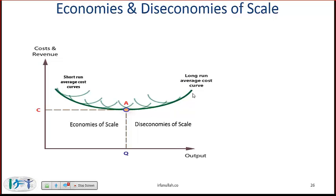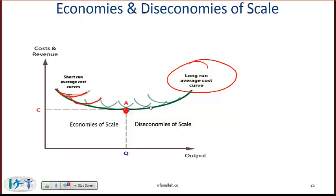Economies and diseconomies of scale: think of the dark green line as the long run average cost curve and the small blue curves as the short run average cost curves. Consider a company with a small manufacturing facility — in the short run the variable cost is labor while the plant is fixed, giving a short run curve. As the company builds a second, third, and fourth plant, each represents a new short run curve. The optimal point might be where the company has four plants. As long as costs are coming down we have economies of scale, but if the company keeps expanding, inefficiencies emerge and average costs start increasing — we then say there are diseconomies of scale.